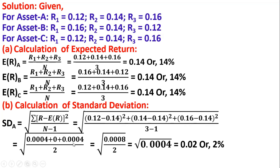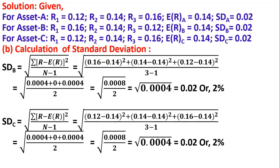The calculated values are: 0.0004, 0.0004, giving 0.0008. This results in approximately 2%, and similarly 3%.